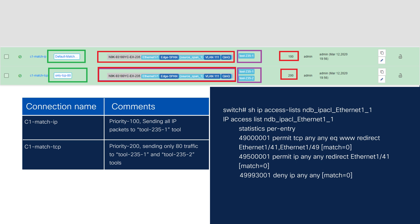To create this with regular connections, notice that the first connection has priority 100 and the second has priority 200. It requires careful thought to assign priorities correctly so each tool receives the right traffic, otherwise one tool may miss traffic. The two regular connections are named 'C1 match IP' with priority 100 and 'C1 match TCP' with priority 200. The resulting ACLs on source port Ethernet 1/1 are shown accordingly.